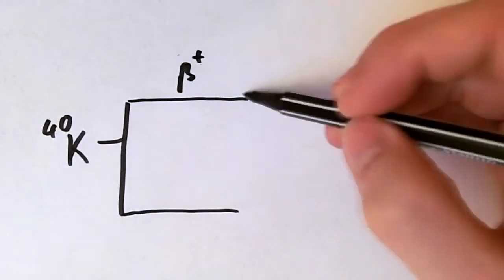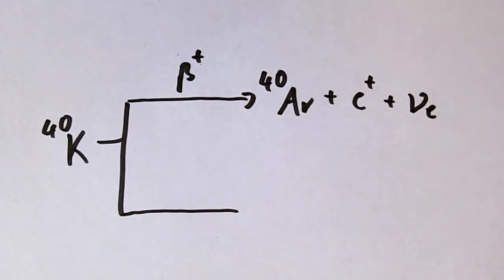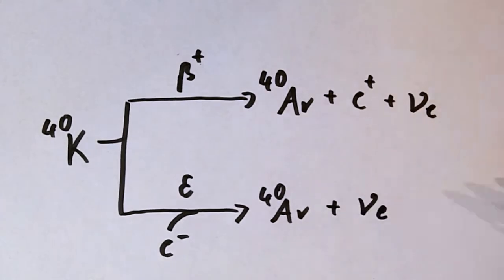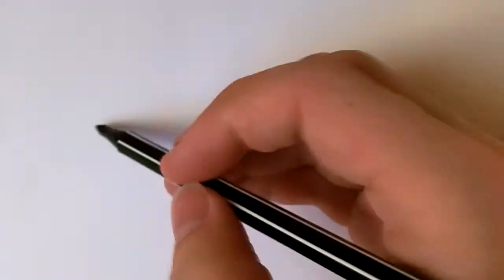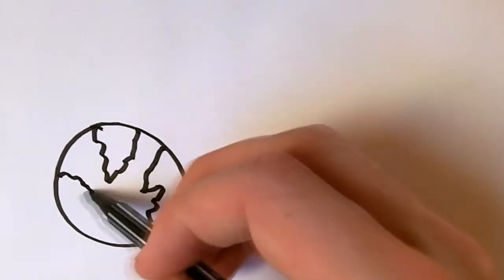Where did the argon come from? Argon comes from the ground. It's actually the product of the nuclear decay of potassium 40 into argon 40. Therefore the argon in our atmosphere is almost exclusively argon 40.